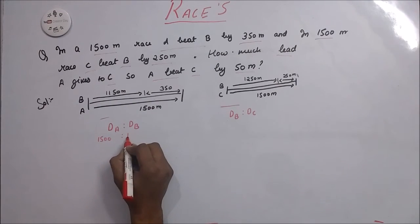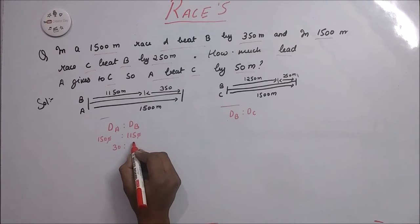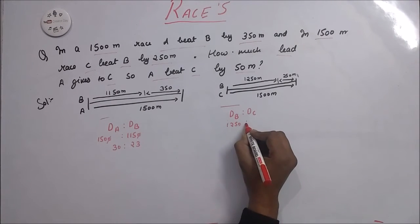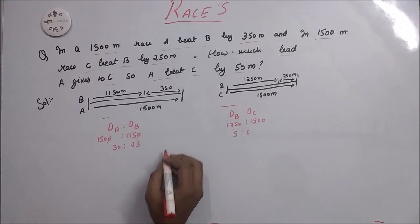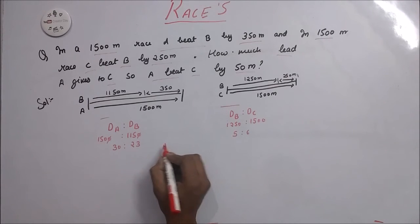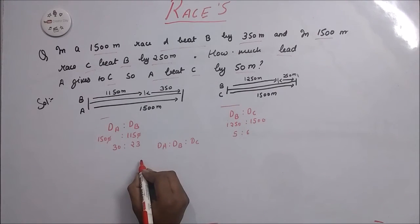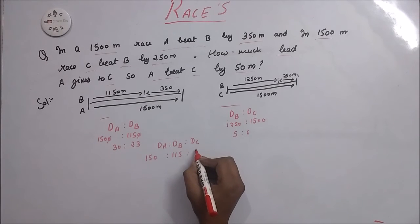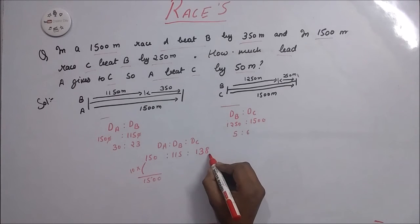1500, 1150, 30, and 23. It is 1250 ratio 1500 which adds up with 5 ratio 6. Now if we combine these two, DA ratio DB ratio DC, we get 150 ratio 150 ratio 138. If we multiply 10 in this, we get total distance. If we multiply 10 in this, 1380.